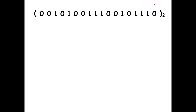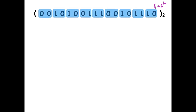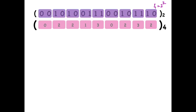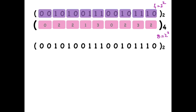First we want to convert to base 4, which is 2 to the power 2, so we make groups of size 2 bits. The next step is to take each group and find its decimal equivalent. This gives us the representation in base 4.